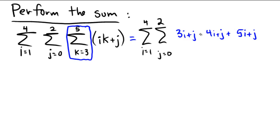So summing all of these up, we get 3 and 4 for 7, and then 5 for 12 i's, plus the j and the j and the j for 3 j's. So after the first stage, we now have a sum going over i and j for 12i plus 3j.